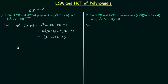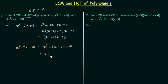Now we will move to the second polynomial: x² - 7x + 10. I can write it as x² - 2x - 5x + 10, since -2x - 5x equals -7x. I can take x common from the first two terms, giving x(x - 2), then take -5 common from the last two terms. Since (x - 2) is common, the factorized form is (x - 2)(x - 5).